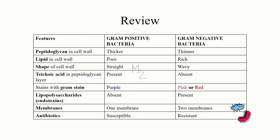Gram negative bacteria do not stain with gram stain; instead they stain with the counter stain safranin, either pink or red. Lipopolysaccharides, also called endotoxins, are absent in gram positive but present in gram negative bacteria. Gram positive has one membrane while gram negative has two. Gram positive bacteria are very susceptible to antibiotics while gram negative bacteria are very resistant to antibiotics. That's it — hope you enjoyed it and learned something. If you did, give this video a big thumbs up.